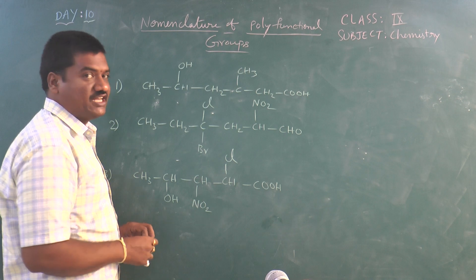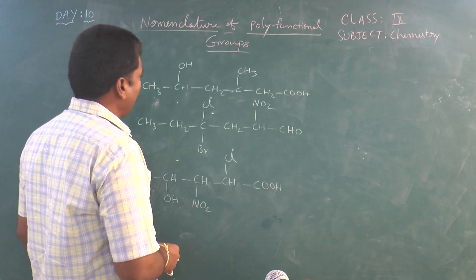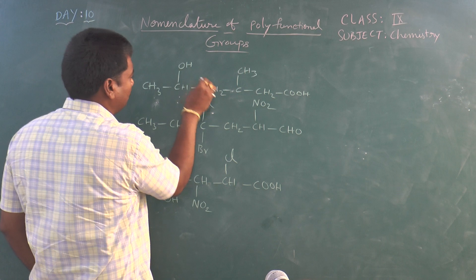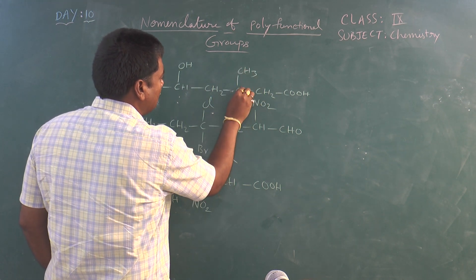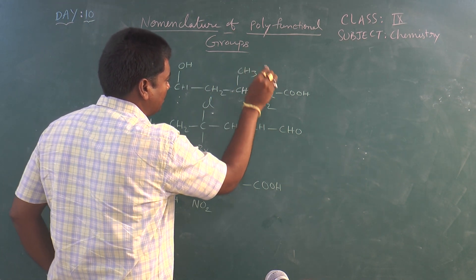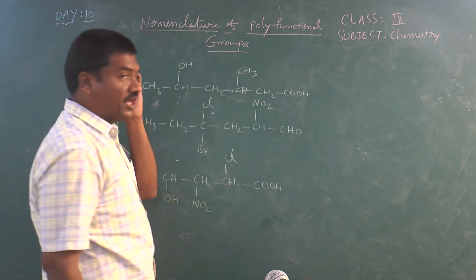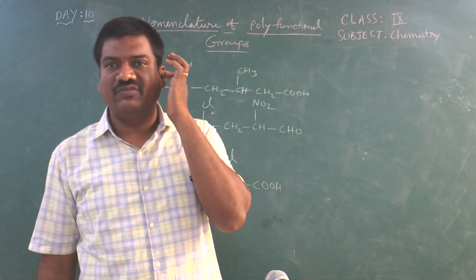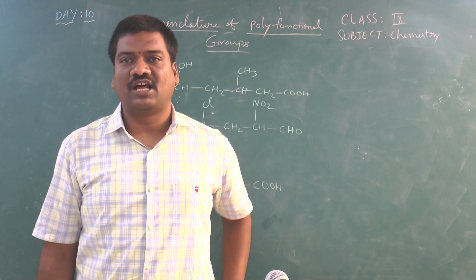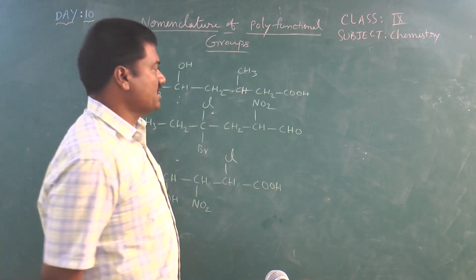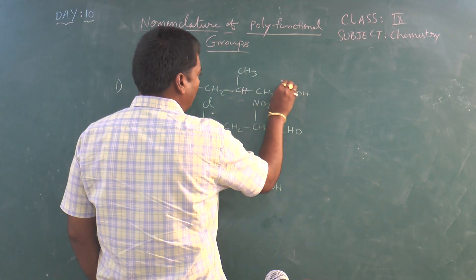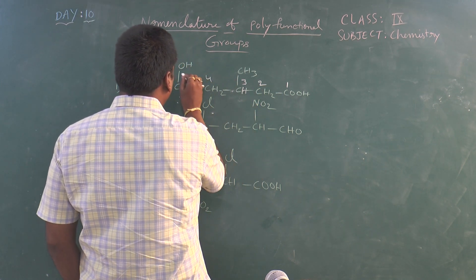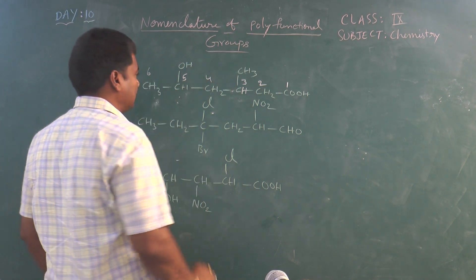In the first example, the given organic compound is: CH3-CHOH-CH2-CHCH3-CH2-COOH. According to the priority order, the first priority we have to give for the COOH group — the carboxylic acid group. So we give numbering from right to left: 1, 2, 3, 4, 5, 6 atoms.